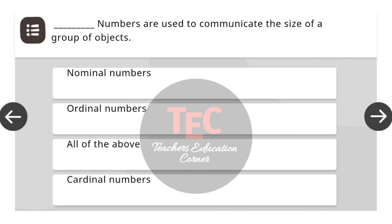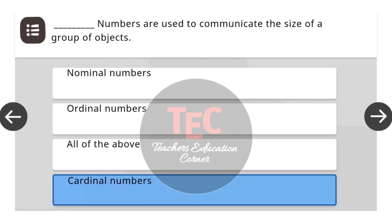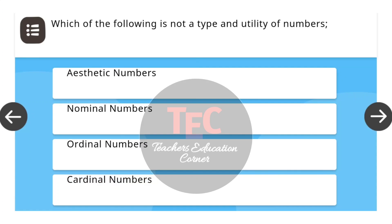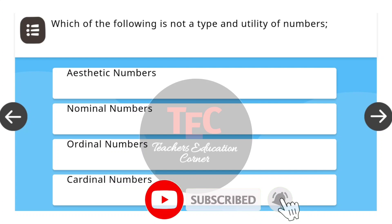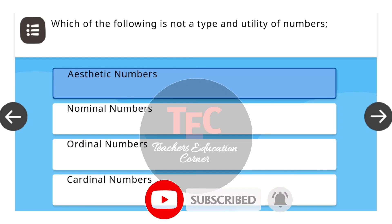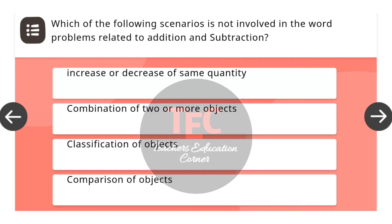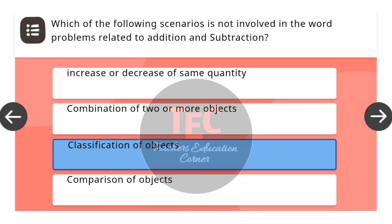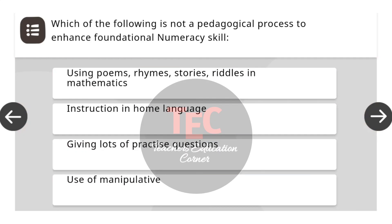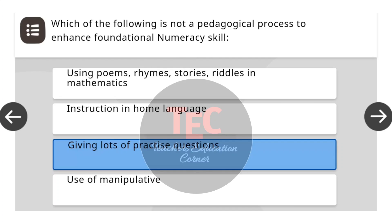Next question: Blank numbers are used to communicate the size of a group of objects. The correct answer is cardinal numbers. Next question: Which of the following is not a type and utility of numbers? The correct answer is aesthetic numbers. Next question: The correct answer is classification of objects. Next question: Which of the following is not a pedagogical process to enhance foundational numeracy skills? The correct answer is giving lots of practice questions.